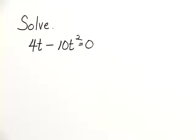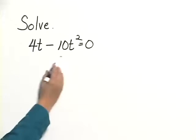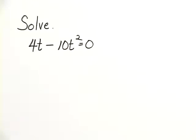Solve 4t minus 10t squared equals 0. We have a quadratic equation because of the t squared term, so we're going to use the principle of zero products.